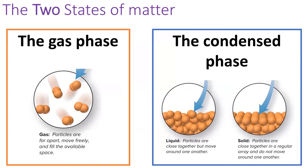The reason for this difference is that gas particles are spread far apart from each other, while particles in the condensed phase are snuggled up next to each other. This is a huge difference, as we'll explore throughout this chapter.